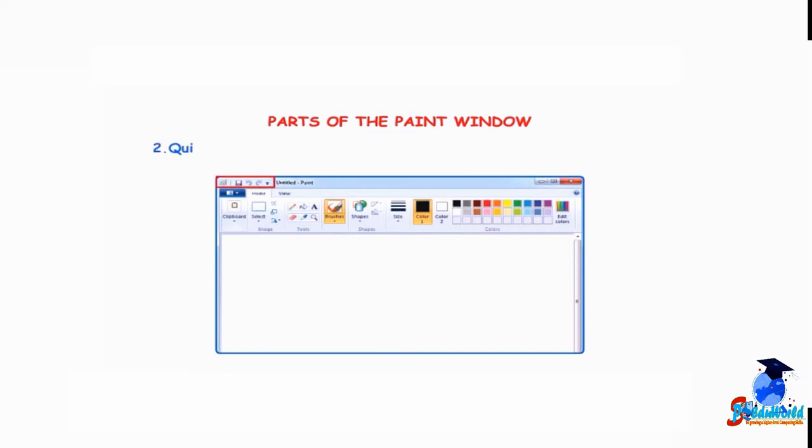Number 2: Quick Access Toolbar. It contains the buttons to do common tasks. Number 3: Paint Button. It contains different options to work in Paint. Number 4: Ribbon. Ribbon consists of two parts: tabs and groups.